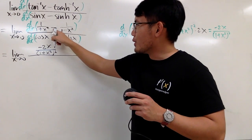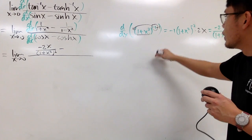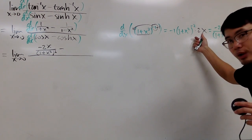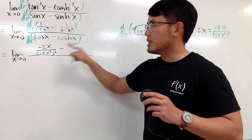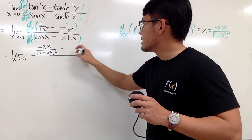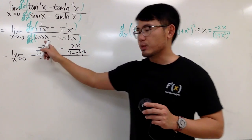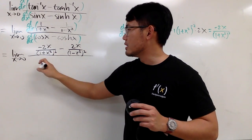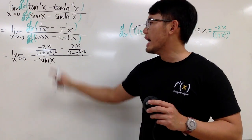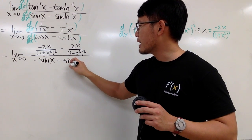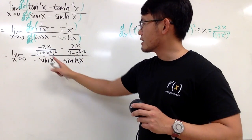To differentiate 1 over 1 minus x squared, it's pretty much the same, except this is minus. When you differentiate inside, this right here will give negative 2x. Negative times negative gives positive, but you do have the minus from the front, so you end up with 2x over 1 minus x squared, squared. The derivative of cosine x is negative sine x, and the derivative of cosh is positive sinh. The minus is still right here, and once again this gives us positive sinh x.